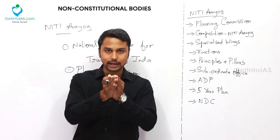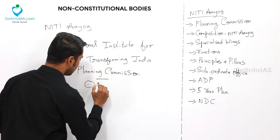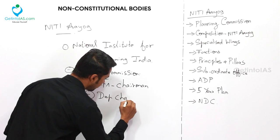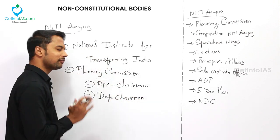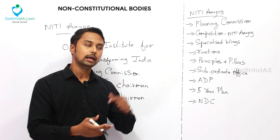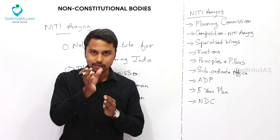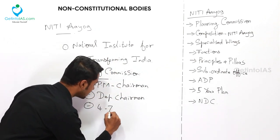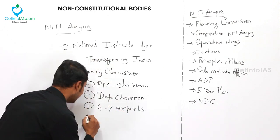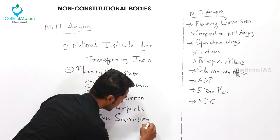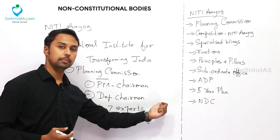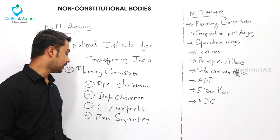The Planning Commission is a multi-member body. The Prime Minister is the chairman. There is also a deputy chairman, who is the functional head of the commission and is appointed by the Union Cabinet with a fixed tenure. The commission also includes some Union Cabinet ministers, four to seven full-time experts with practical knowledge in planning, and one member secretary, usually a senior IAS officer.